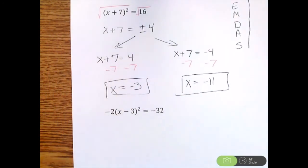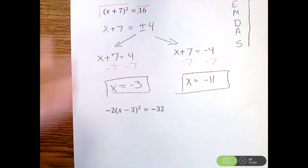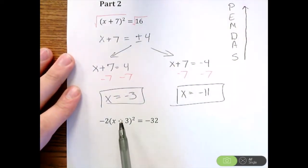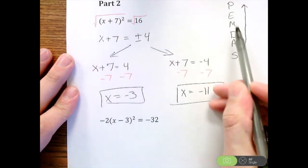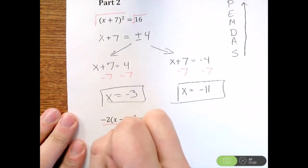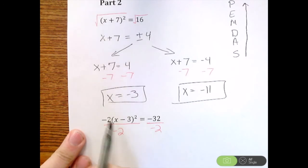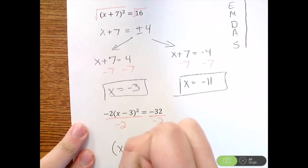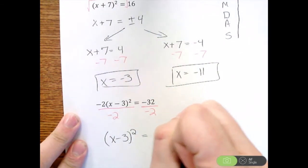The second problem is a little more complex: we have -2(x - 3)² = -32. Working the order of operations backwards, I can't touch the subtracting three inside the parentheses yet. Next I'd eliminate multiplication or division — there's a multiplication by negative two here. So we divide both sides by negative two, which cancels that factor and gives us (x - 3)² = 16.